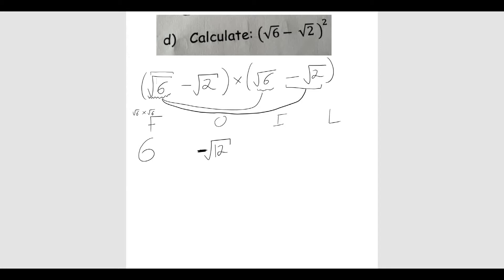Now I do my inside. So I've finished with the first term of the first bracket. So I'm going to take the second term of the first bracket and times it by the first term of the second bracket. Minus root 2 times root 6, which is also going to be minus root 12.